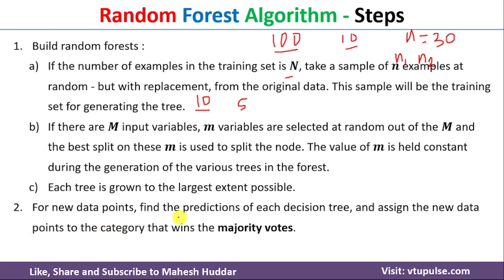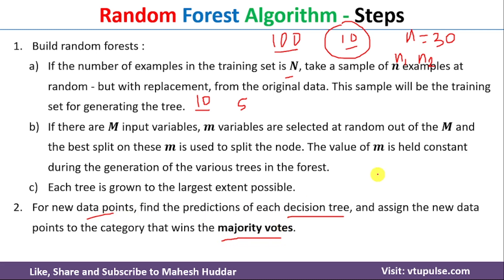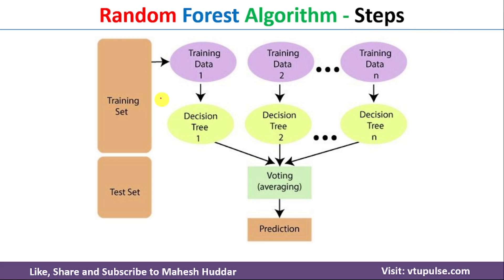Once the decision trees of the Random Forest are built, whenever we get a new data point, we give it as input to each decision tree in the Random Forest. With 10 decision trees, each makes a different prediction. For a classification problem, we take the majority vote — whichever class has the most votes is assigned as the label. For a regression problem, we take the average of the 10 decision tree predictions as the final output.